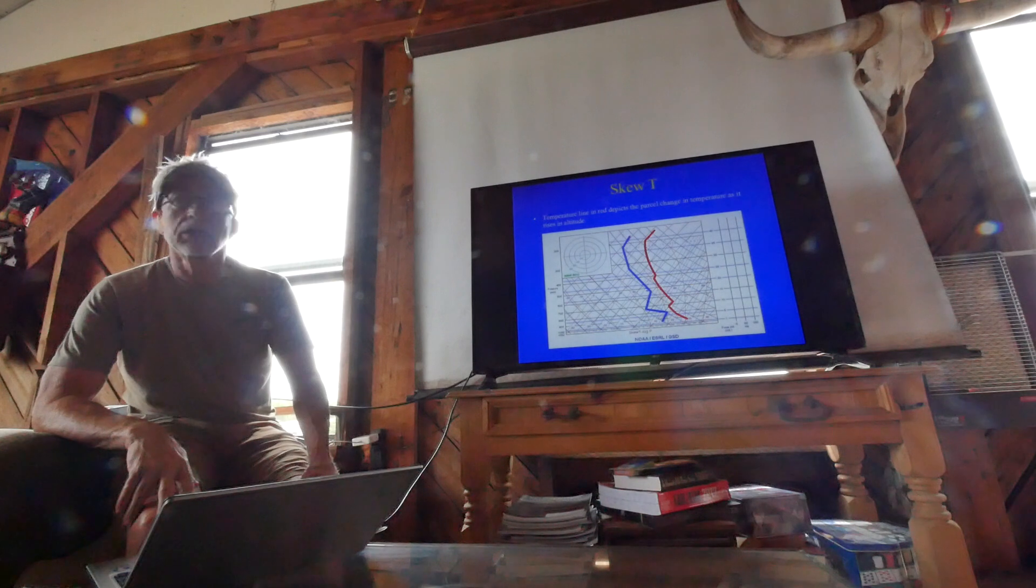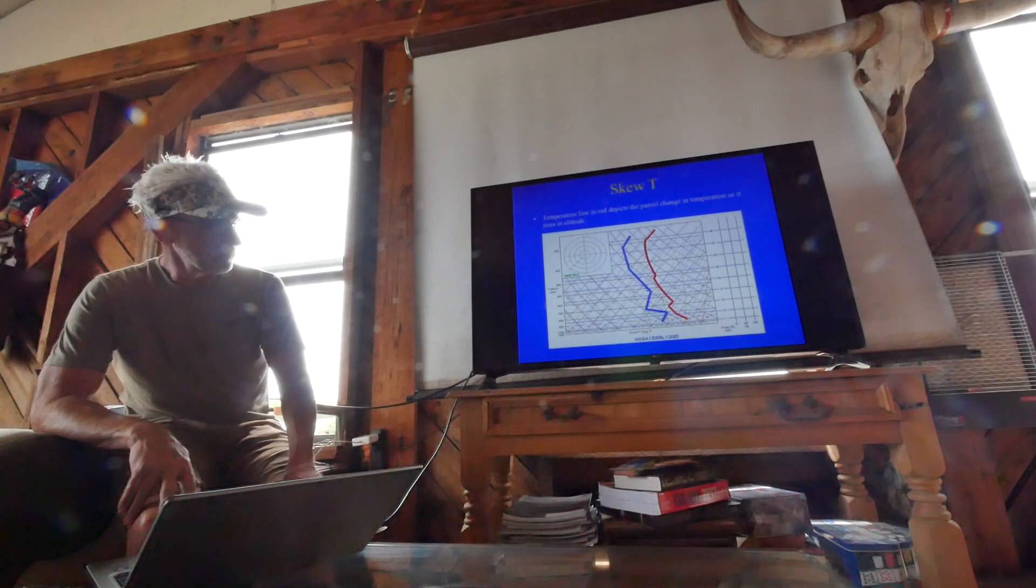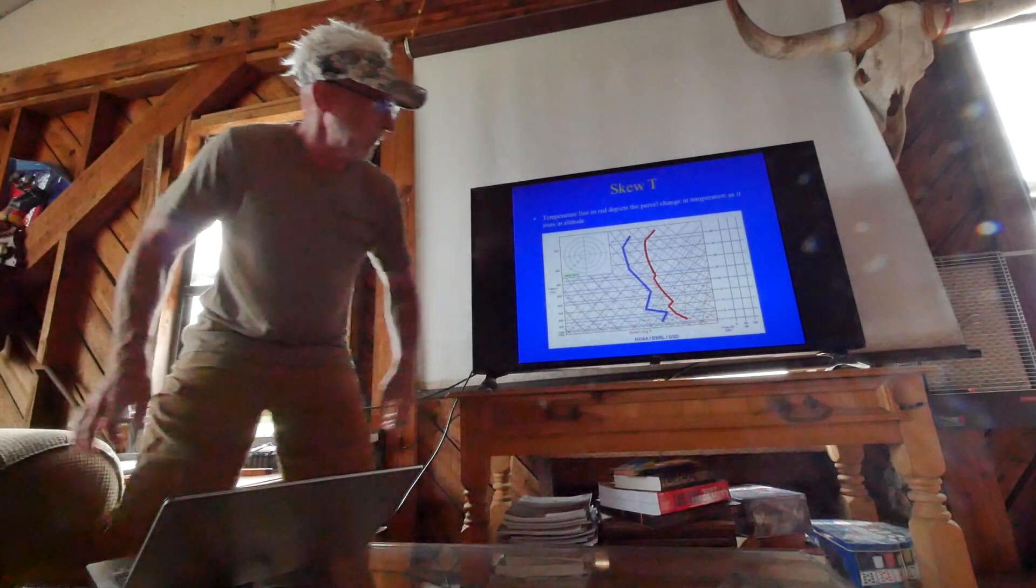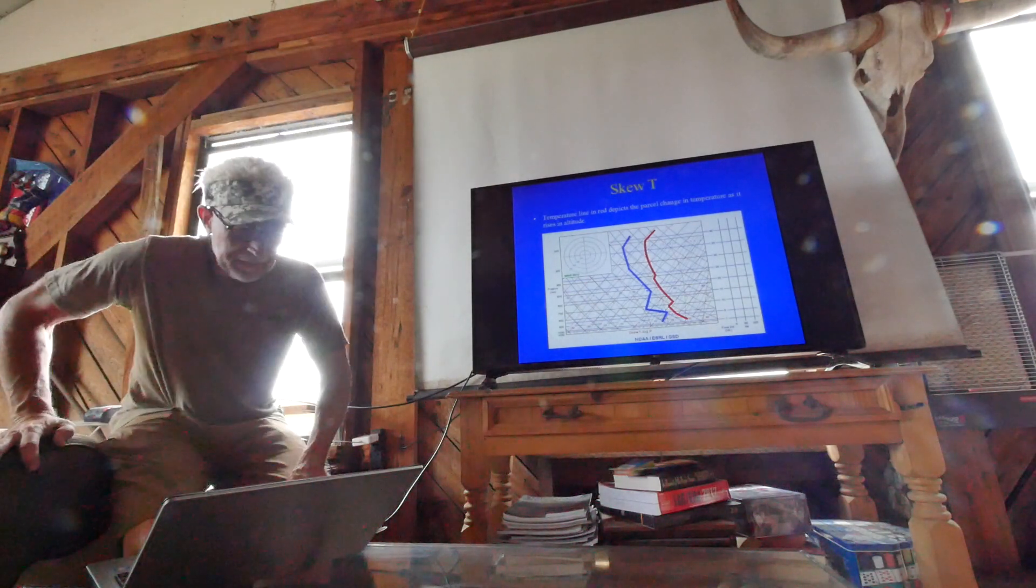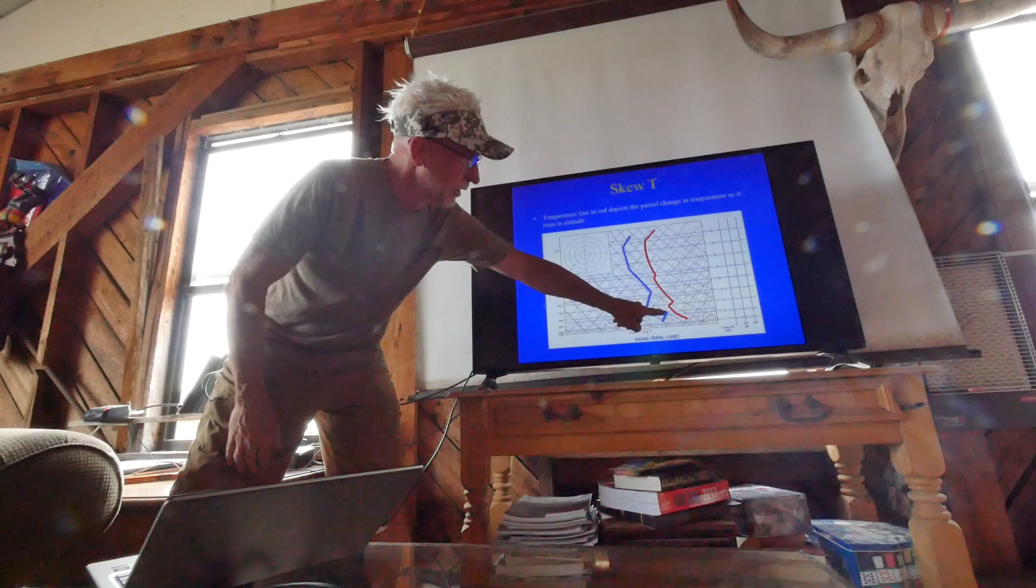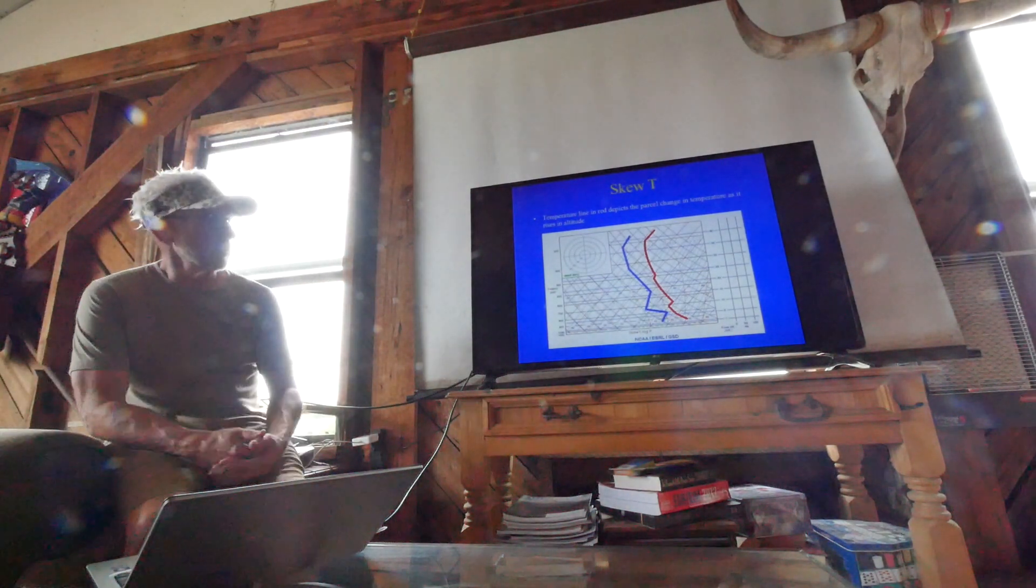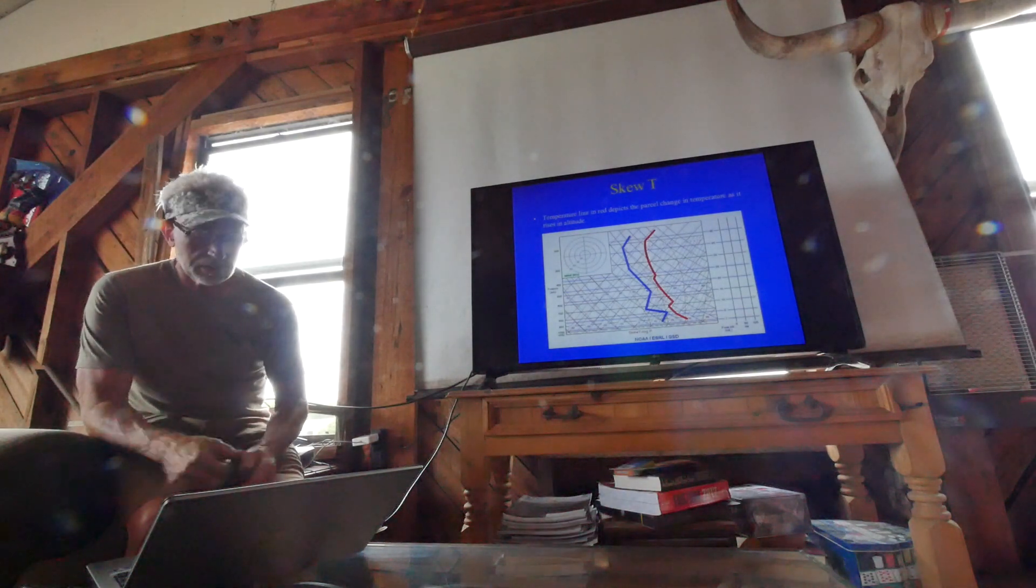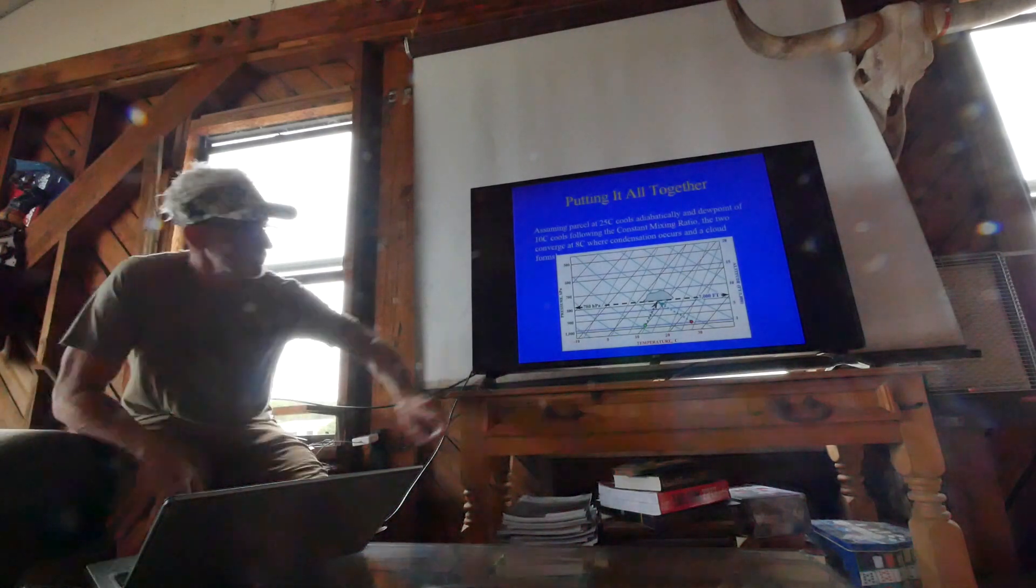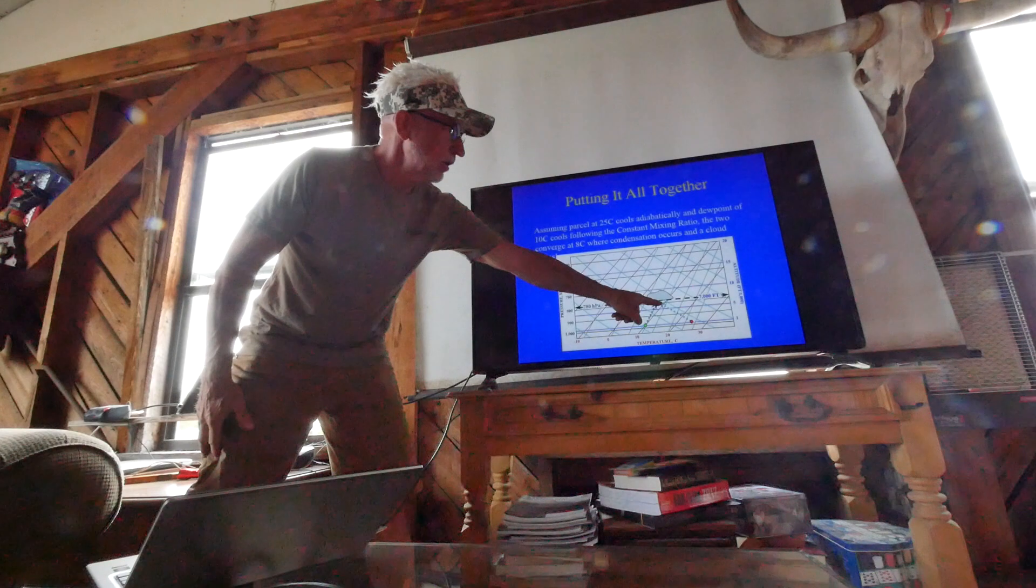Eventually above 12,000 feet it starts cooling again. The left line is the dew point, and you can see the dew point is cooling as altitude increases. Keep those two in mind because a parcel that rises and cools adiabatically, once it matches that dew point line, that's where condensation will occur.